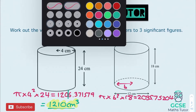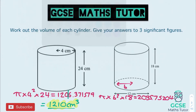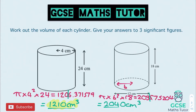We just need to round that to three significant figures. Taking 203, chopping after the three — that's to the nearest ten — so our final answer is 2040 centimetres cubed. And there are our two answers for those two cylinders.